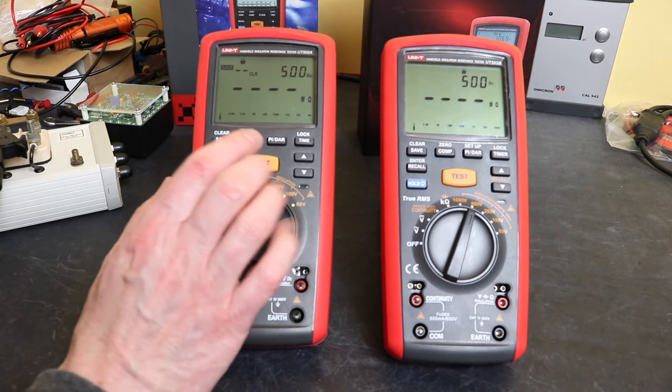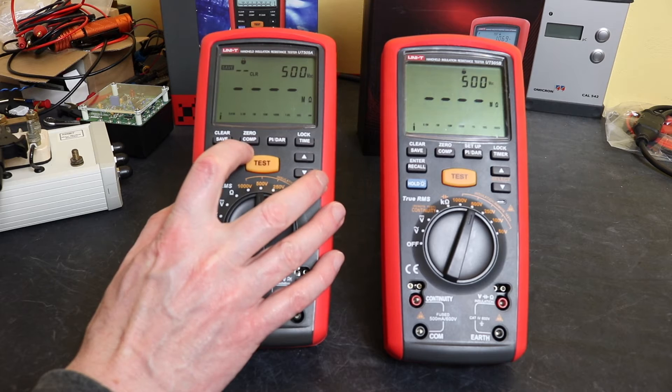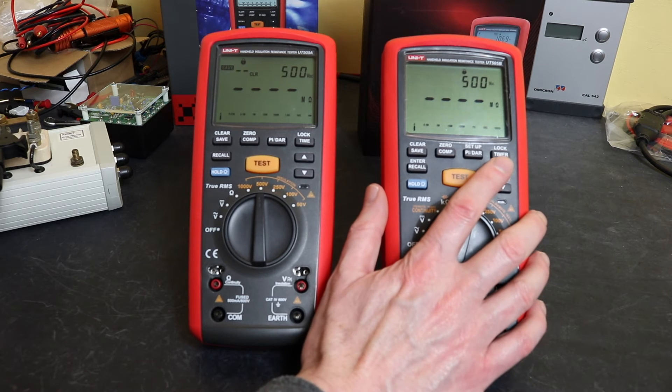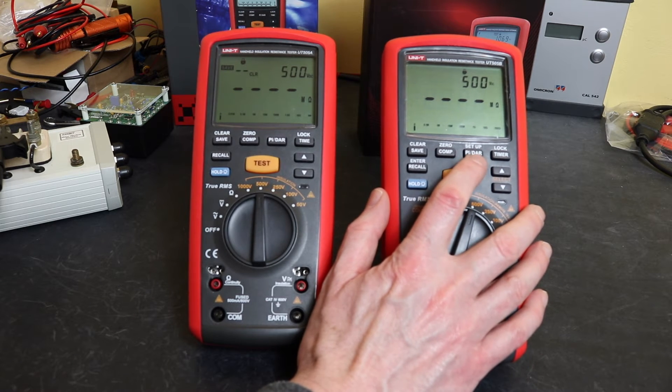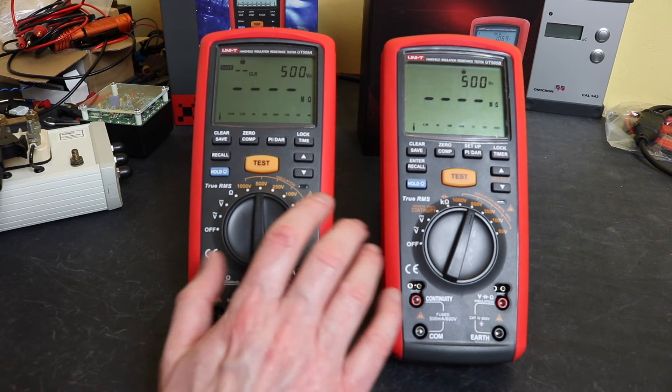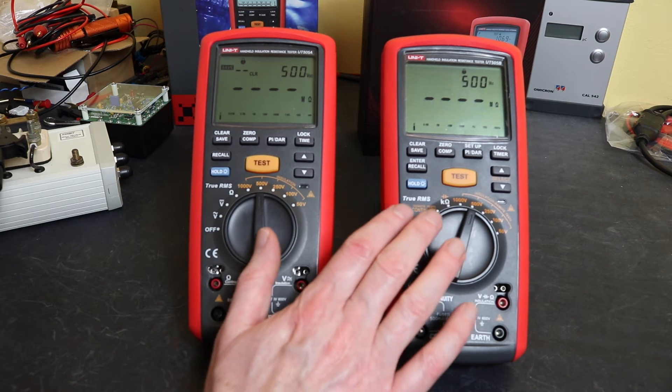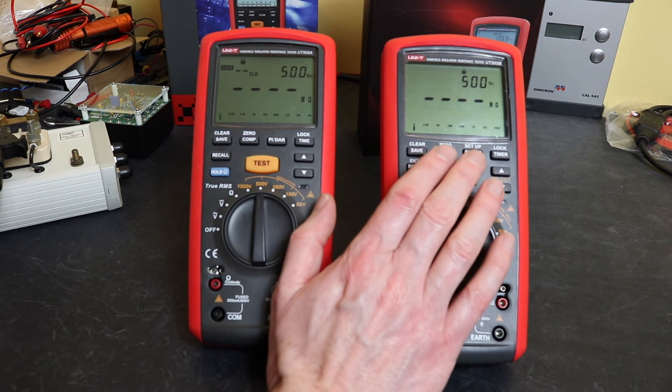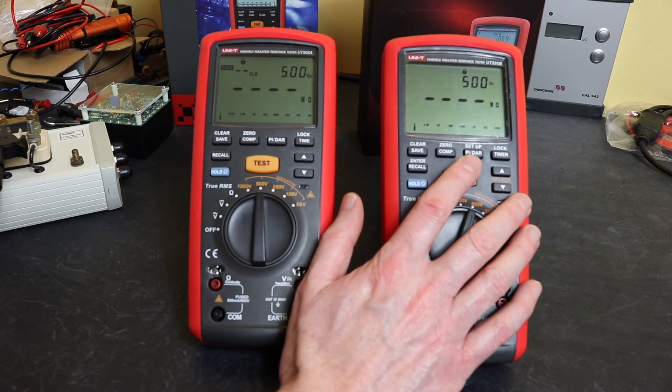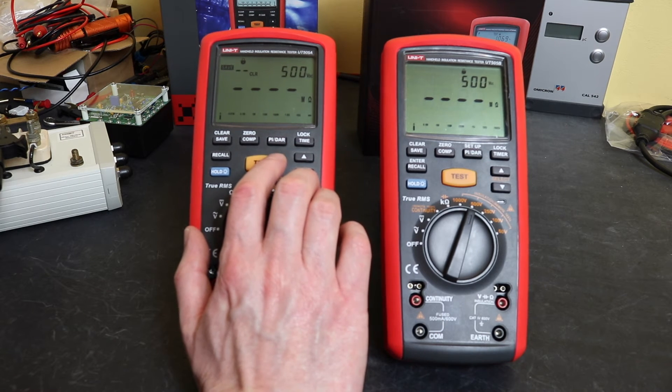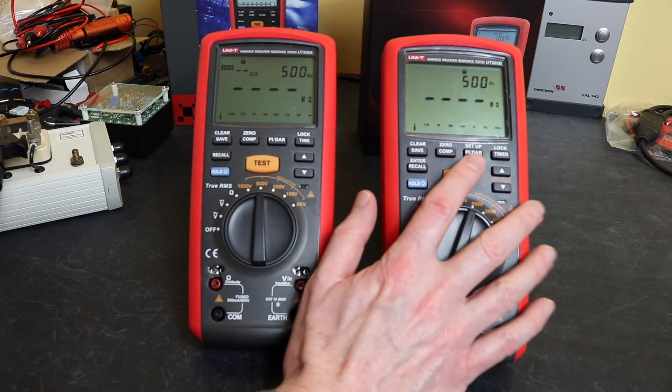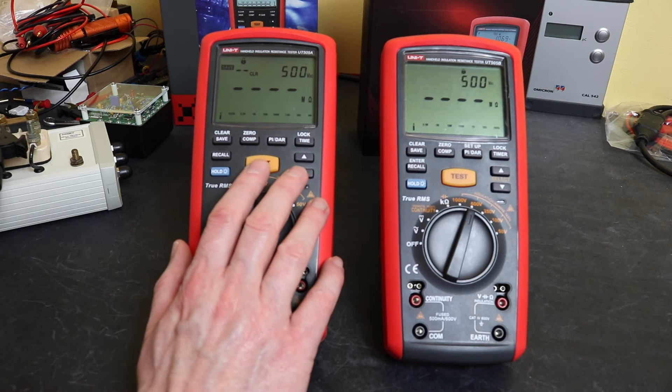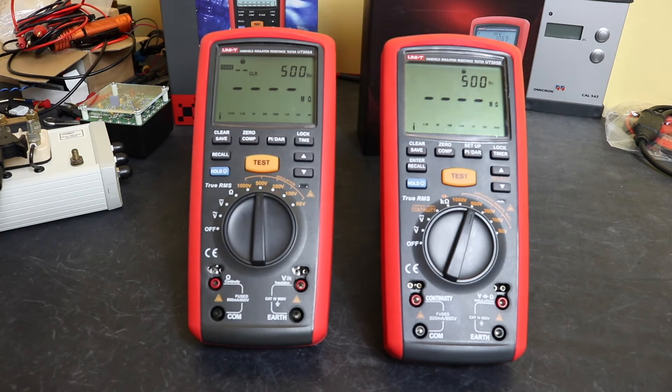With regard to the functionality on the insulation test, you do have a comparison function in there - PI and DAR and a time function. Whilst the UT505B does have the same function as that, the PI and DAR and timer do function in a slightly different manner than they do on the UT505A. You actually get the mega ohm readings whilst this is testing that you don't see with the UT505A, and they do cut off at the end of the PI and DAR test as well, whereas the UT505A you do have to stop manually. However, at the end of the test you do lose the mega ohm resistance - that's just replaced with the actual ratio for the PI and DAR, whereas you can see the mega ohm reading and the PI and DAR ratio on the UT505A.